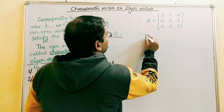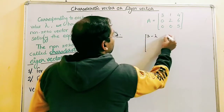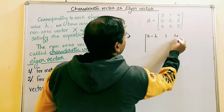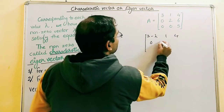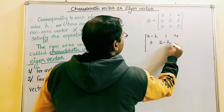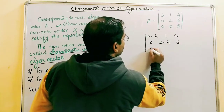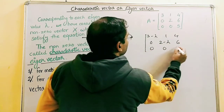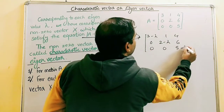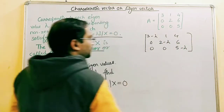The characteristic matrix A minus lambda I will be: row 1 is (3-lambda), 1, 4; row 2 is 0, (2-lambda), 6; row 3 is 0, 0, (5-lambda).